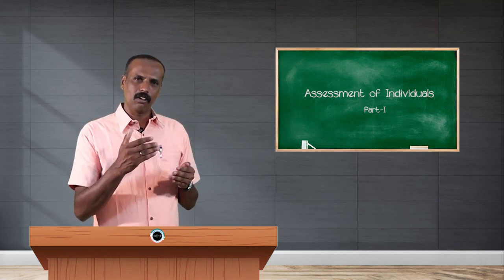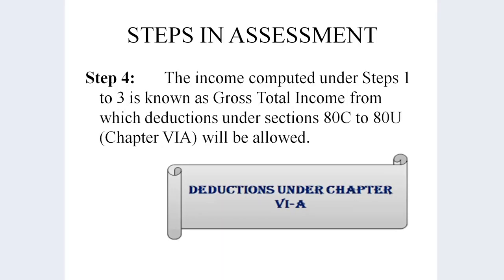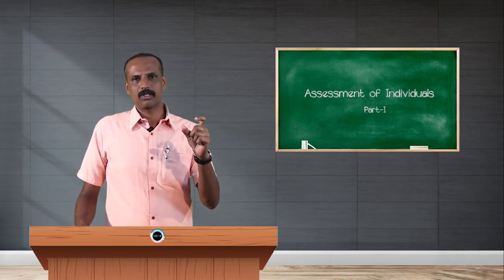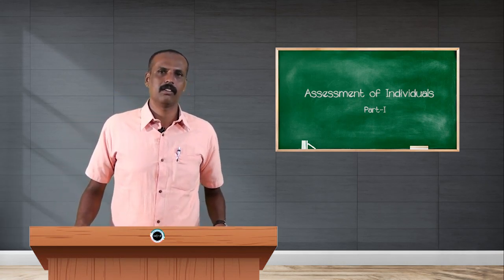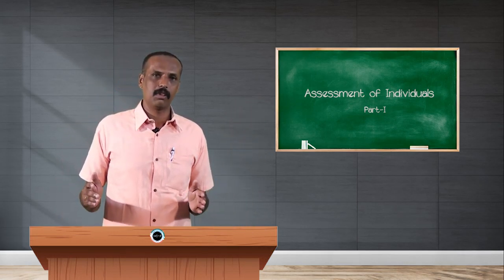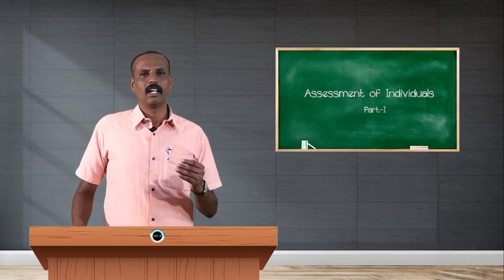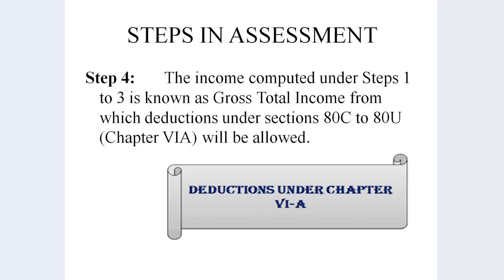The fourth step: after calculating all the above, we arrive at the gross total income. As per the Income Tax Act 1961, under Chapter VI-A, there is eligibility to reduce the tax burden by applying deductions. These deductions range from 80C to 80U and are applicable to individual assessees. The amounts from steps 1, 2, and 3 must be reduced by the applicable deductions, which cover investments, expenditure, and savings, to arrive at the total income.